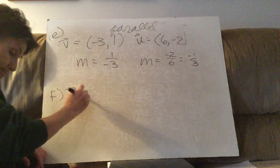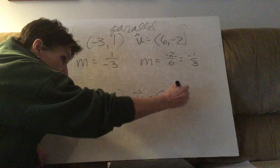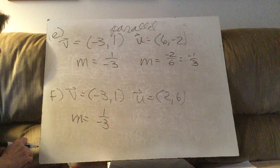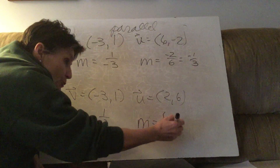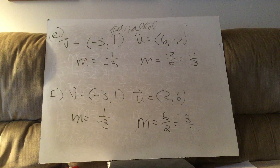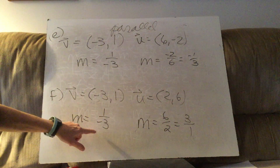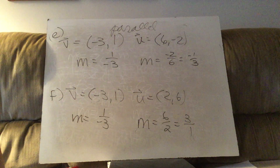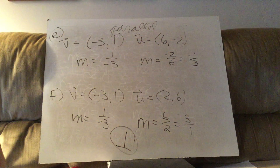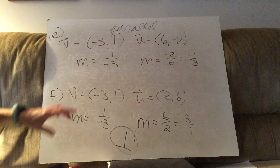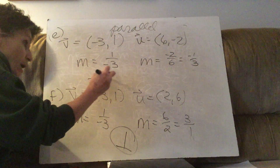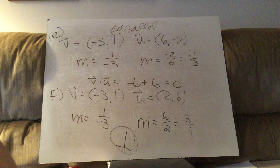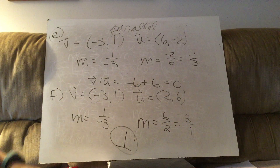Problem F: slope of the first is 1 over negative 3. Slope of the second is 6 over 2, which reduces to 3 over 1. One is positive and one is negative, and they are reciprocals — opposite reciprocals — so these vectors are orthogonal. You can verify with the dot product: x times x is negative 6, y times y is 6, add them and you get zero.